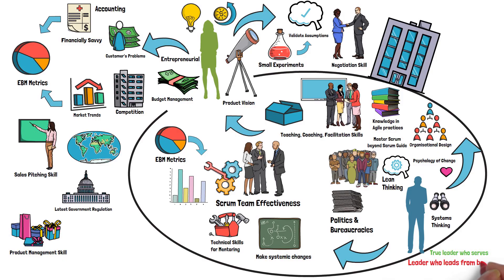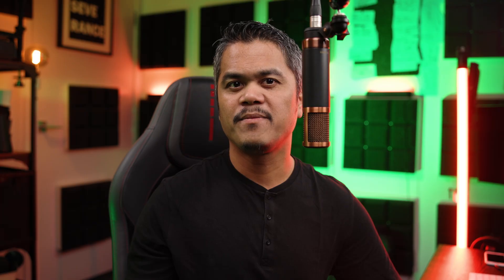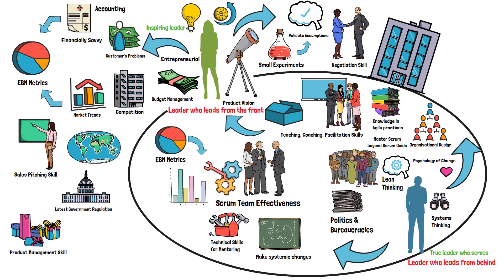The Scrum Master needs to master Scrum beyond just what's written in the Scrum Guide. The Scrum Master is a true leader who serves — a leader who leads from behind. The Product Owner is also a leader, but they lead from the front, towards the long-term vision of the product — that's why the Product Owner needs to be an inspiring leader. As leaders, both the Product Owner and the Scrum Master are people-centric and great communicators.